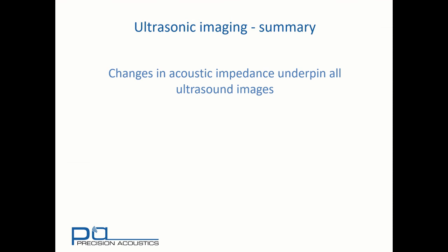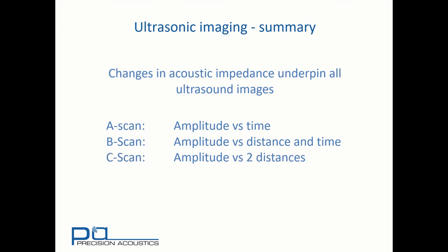So to recap then, changes in ultrasonic impedance underpin all ultrasound images. A-scans are expressed as amplitude against time. B-scans are amplitude against distance and time. And C-scans are amplitude against two distances. We hope you found this interesting. If you did, come back and find some more of the Precision Acoustics tutorial videos.